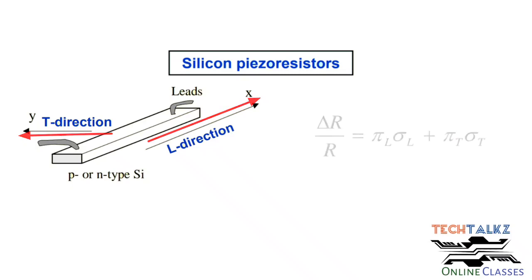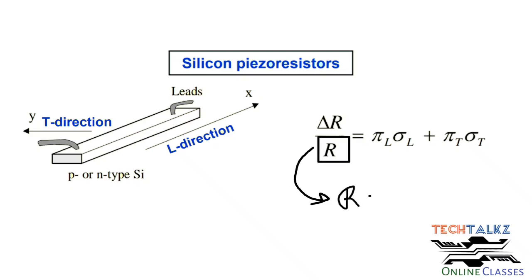Then, the change in resistance with respect to the original resistance can be expressed as: along the x-axis direction, it equals pi-L multiplied by the longitudinal stress component sigma-L, plus the transverse coefficient pi-T multiplied by sigma-T. The y-axis stress component is sigma-T. The original resistance is calculated as rho times L divided by A.